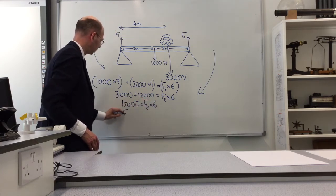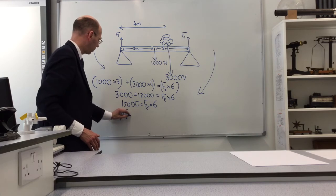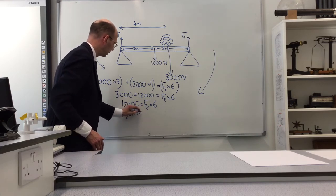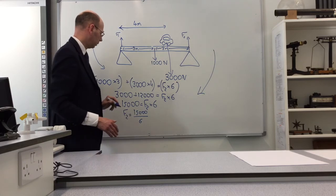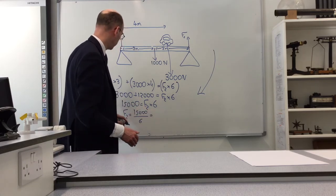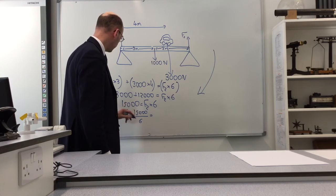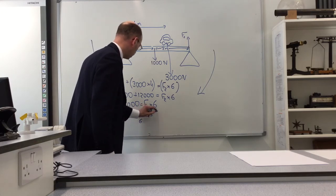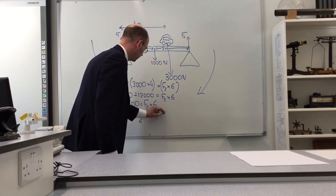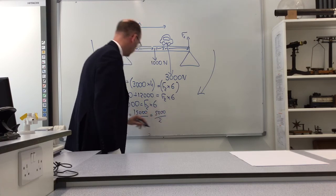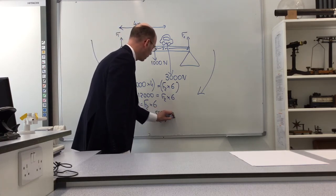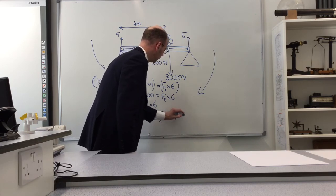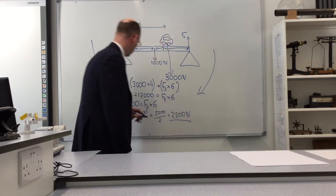So F2, if I divide both sides by 6, will be equal to 15000 divided by 6. You might need a calculator for that, or you might be able to do it in your head. I'm going to do it by factorizing a bit. Divide top and bottom by 3, we've got 5000 over 2, and divide that by 5000 by 2 gives me 2500 newtons of force.